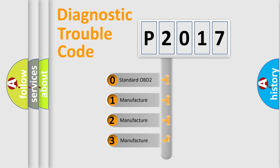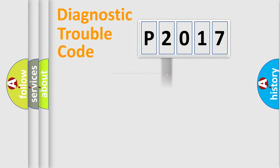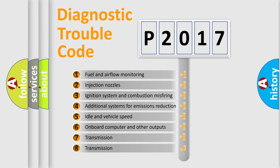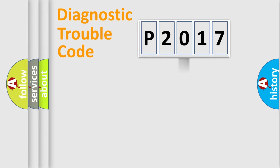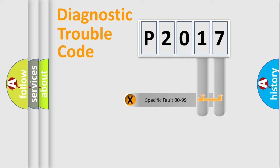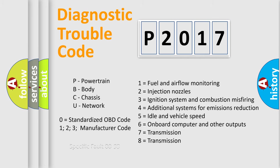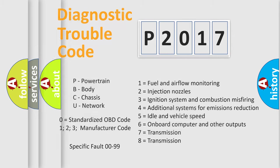If the second character is expressed as zero, it is a standardized error. In the case of numbers 1, 2, or 3, it is a more manufacturer-specific expression of a car-specific error. The third character specifies a subset of errors. This distribution is valid only for the standardized DTC code, and only the last two characters define the specific fault of the group.